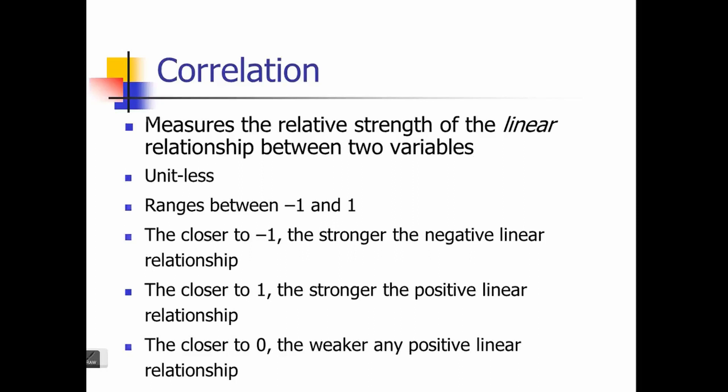Correlation is unitless — that means irrespective of which variable you are measuring correlation for, it doesn't have any unit. Whether you're measuring correlation between two different weights, lengths, volumes, or anything else, irrespective of the unit you will have a comparable correlation. It lies between minus one and one. The closer it is to minus one, the stronger the negative linear relationship; the closer it is to one, the stronger the positive linear relationship.